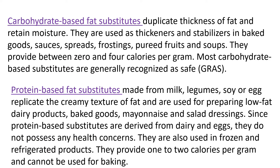In brief, the first one is carbohydrate-based substitutes. They duplicate the thickness of fat and retain moisture. They are used as thickeners and stabilizers in baked goods, sauces, spreads, frostings, purees of fruits, and soups. They provide about 0 to 4 calories per gram. Most carbohydrate-based substitutes are generally recognized as safe (GRAS).